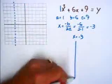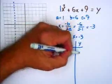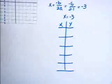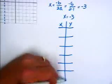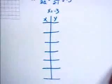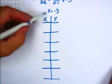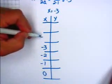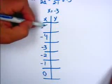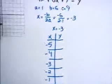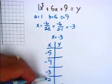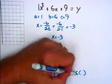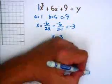So x equals negative 3. Now we need to find some more points — 6 points total. We're going to use x values: negative 3, negative 2, negative 1, 0, negative 4, negative 5. The equation is x squared plus 6x plus 9.